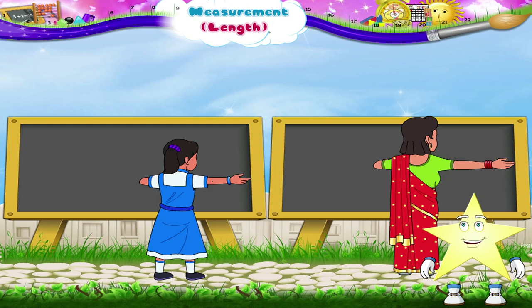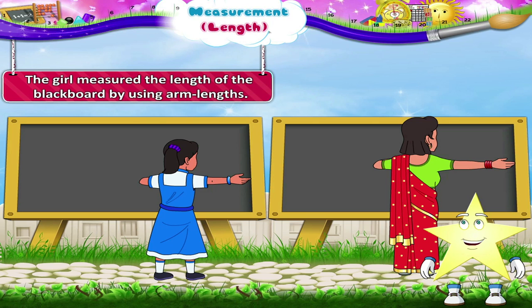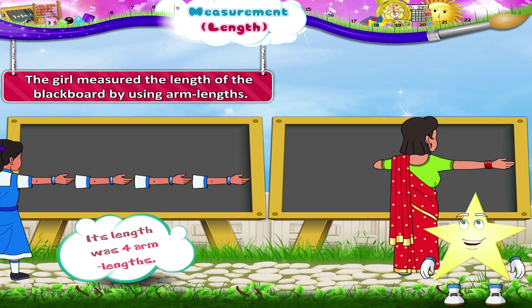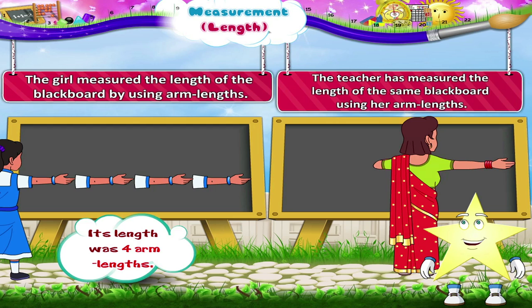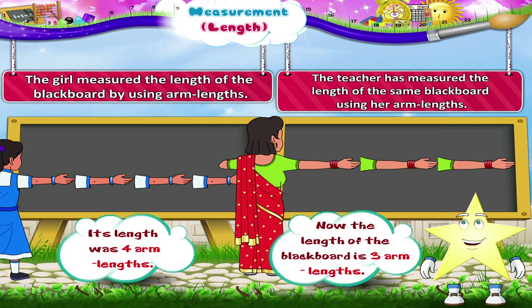Starry, take a look at these two pictures. In the first picture, we see that the girl measured the length of the blackboard by using arm lengths. Its length was four arm lengths. In the second picture, the teacher has measured the length of the same blackboard using her arm lengths. Now the length of the blackboard is three arm lengths.